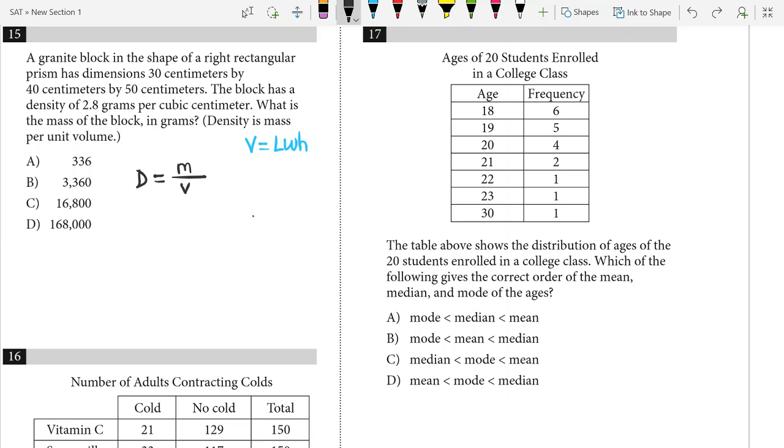And that's going to give us 60,000, and it tells us that the density is 2.8, so I'm going to say 2.8 equals m over 60,000, which is what you get when you multiply 30 times 40 times 50. So if I want to find the mass,